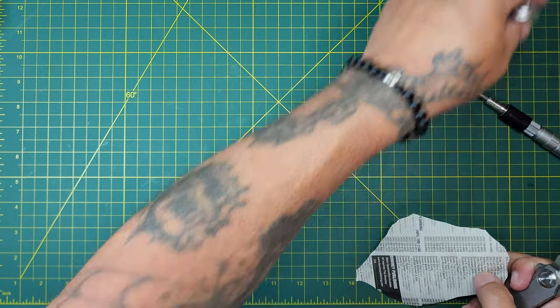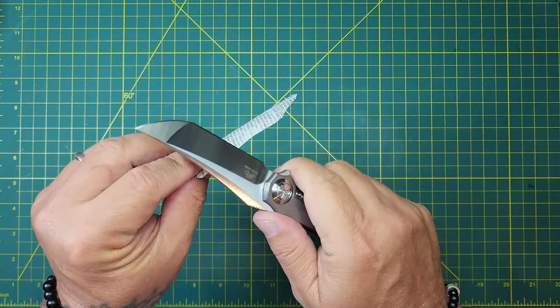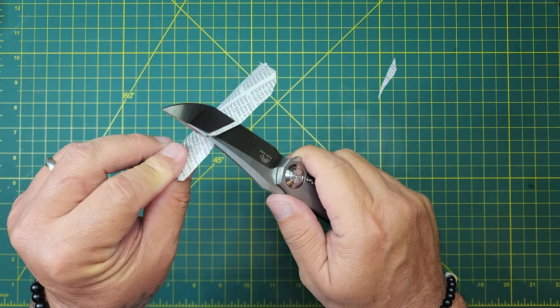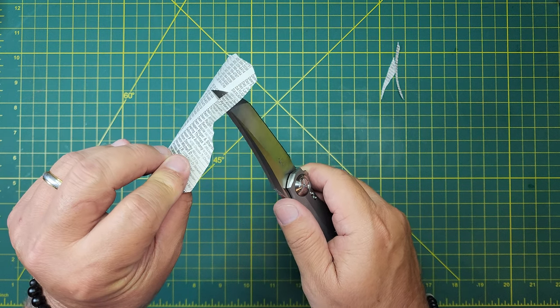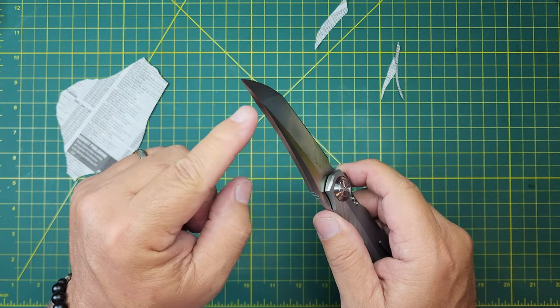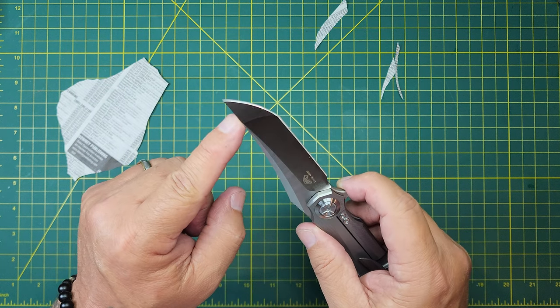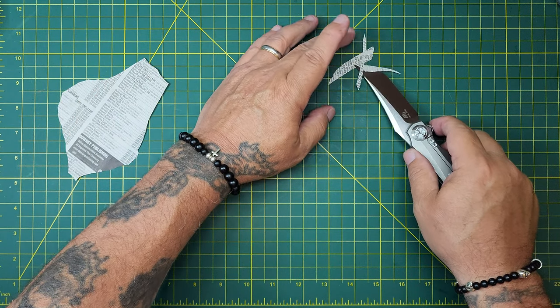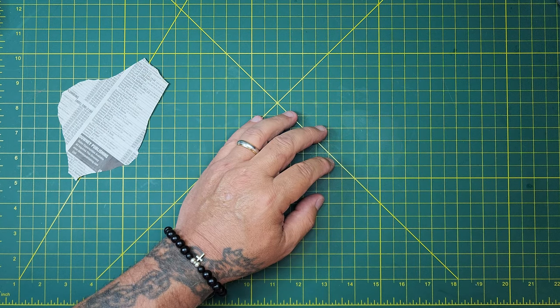Alright, does it cut? Uh, yeah. Super duper sharp. Even that thicker tip that's carrying the thickness of that blade down for strength, even that part's sharp. So, yeah, super sharp. Um, let's see, let's see if it's cursed. We already checked the pocket clip.